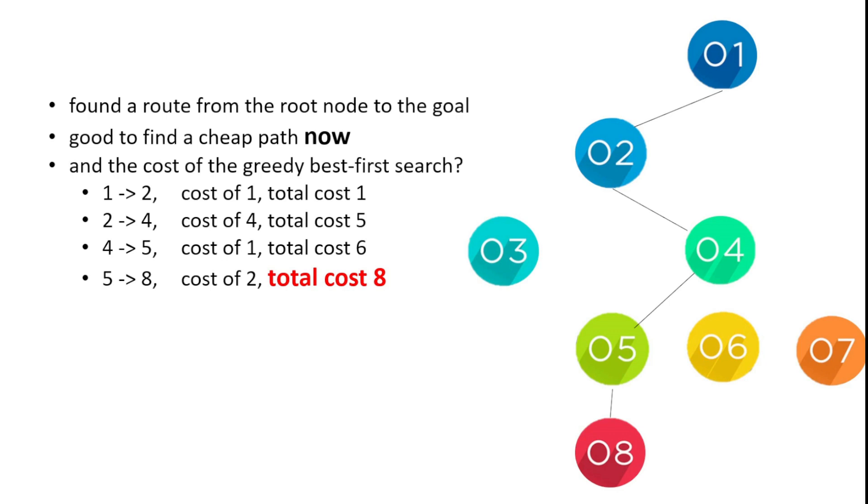And you can see here that the total cost of that path is a total cost of 8. We can see the numbers there. So our greedy best-first search found a reasonable path to our goal.